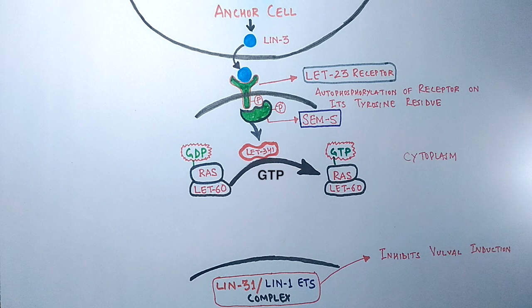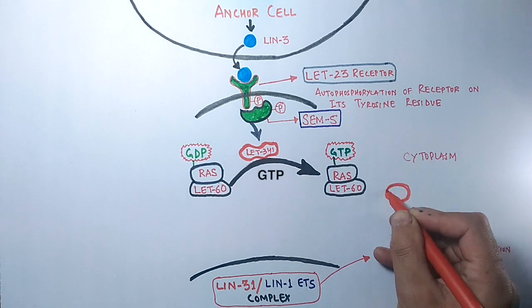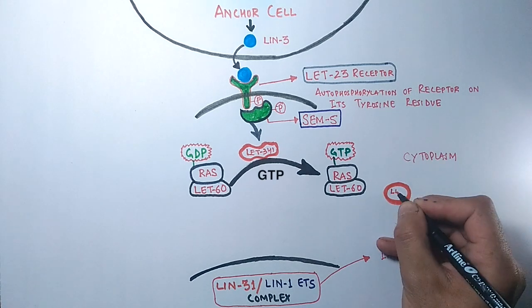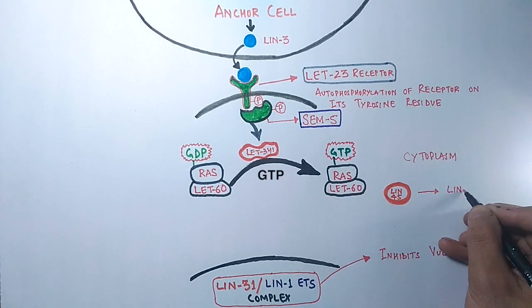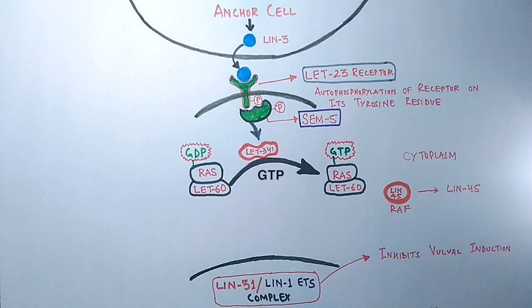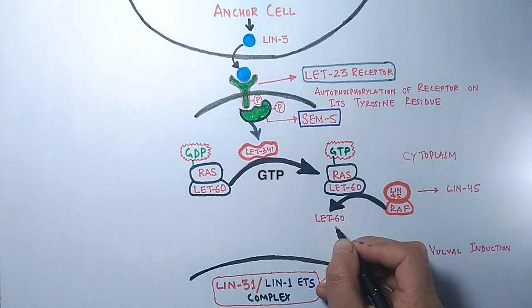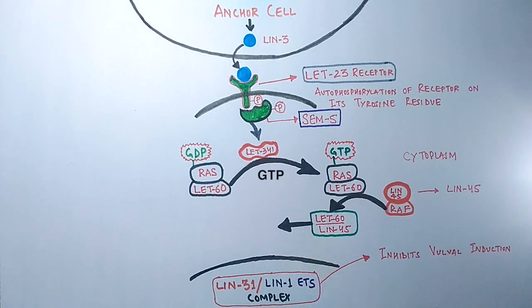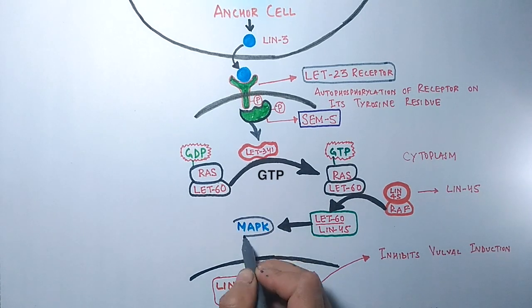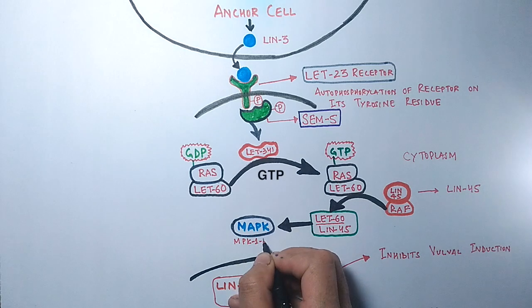This activated let-60 molecule now activates another downstream molecule called lin-45, the RAF analog molecule. It activates the protein kinase activity of lin-45. Finally, the activated lin-45 shows its own kinase activity and phosphorylates and activates the final molecule, the MAPK molecule. In this case it's MPK-1 MAPK molecule.